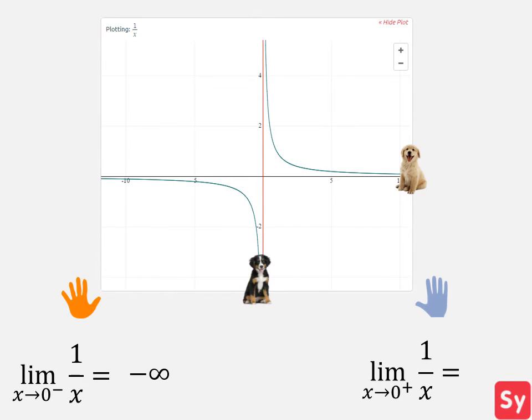Now let's find the right hand limit. We see the puppy approaches infinity. So the right hand limit is infinity.